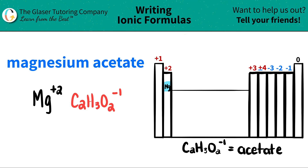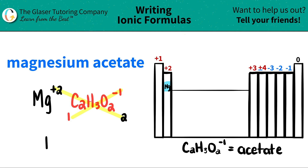Now that we have the charges, all we have to do is crisscross them to tell us how many of each component we need in the compound. The two crisscrosses down, telling me I need two acetates, and the negative one crisscrosses down telling me I need one magnesium. Once you do that, forget about the charges — you're only looking at the subscripts.